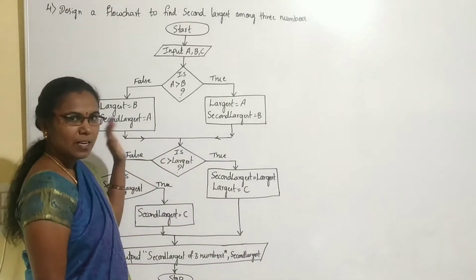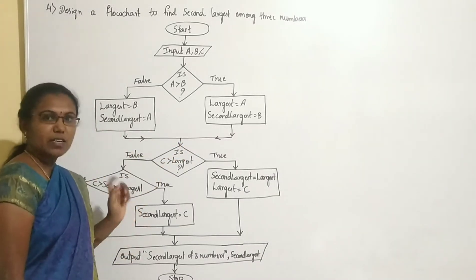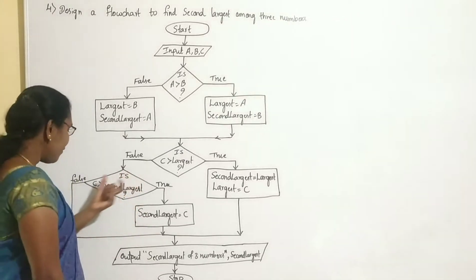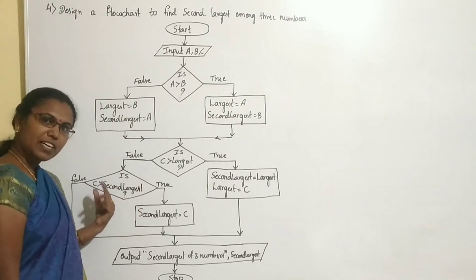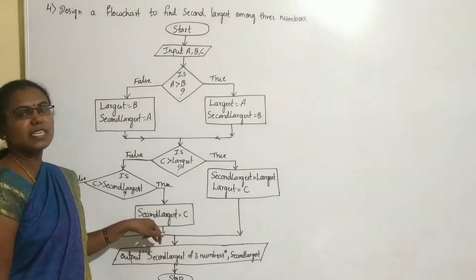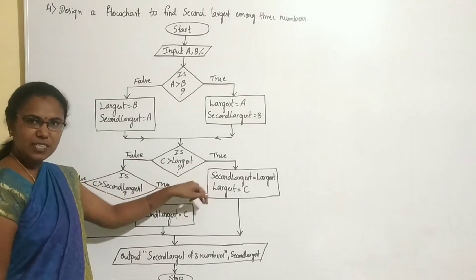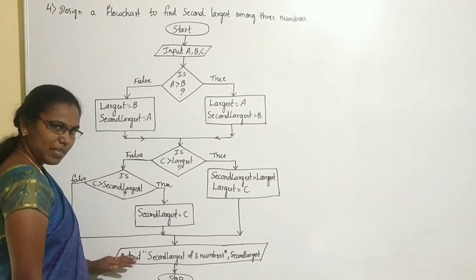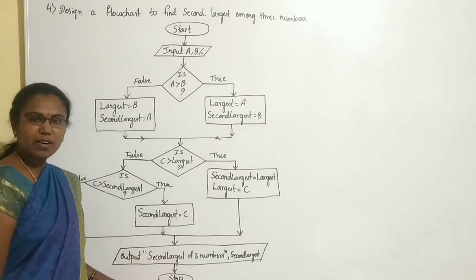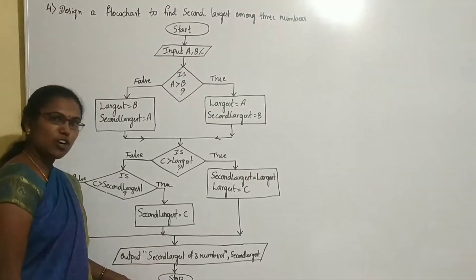If false — if C is not greater than largest — we check whether C is greater than second largest. If that condition is true, then C is assigned to second largest. If false, the current second largest remains unchanged. Then we come out of the statements and print the second largest among the three numbers. After displaying the output, we terminate the flowchart using the stop terminal.